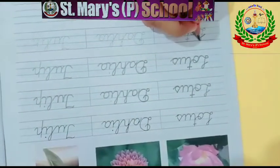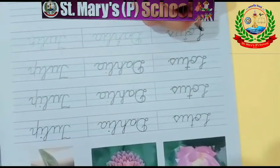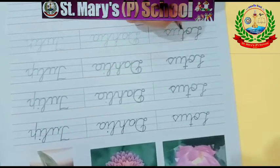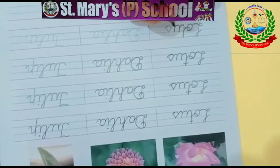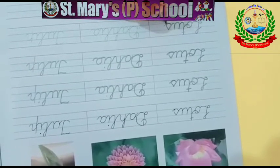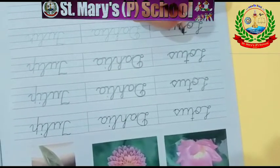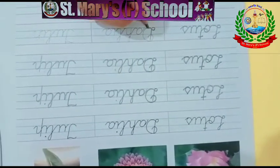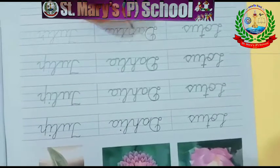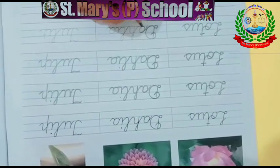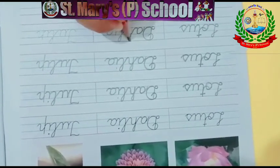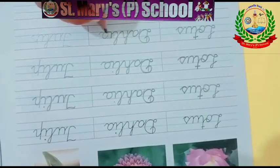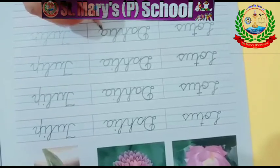Next, again. L, O, T, U, S — Lotus. D, E, H, L, I, E — Dahlia.